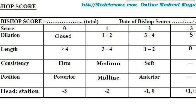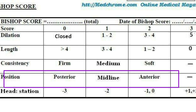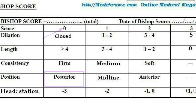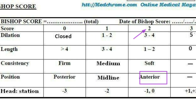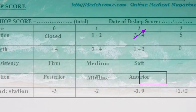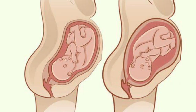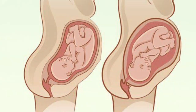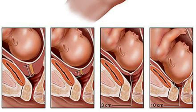The fourth parameter is position of the cervix. If the position of the cervix is posterior to the maternal spine, the score is zero. If the cervix is in the midline, the score is one. If the position of the cervix is anterior to the maternal spine, the score is two. The maximum score for position is two, as the most favorable position is anterior.